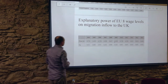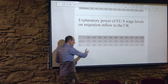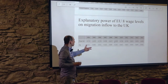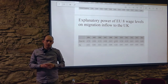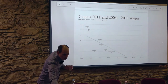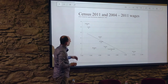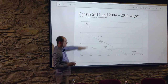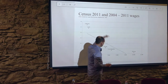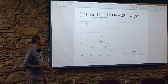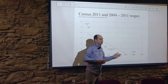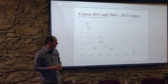There is a notable and significant correlation between the wage levels in these countries and the numbers per capita of how many people migrated to the UK. Graphically: the higher the wage level, the lower the per capita migration. These are migration figures from the 2011 census and average wage levels for the 2004 to 2011 period.